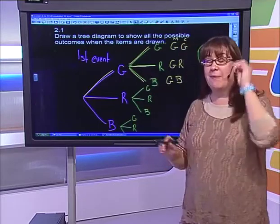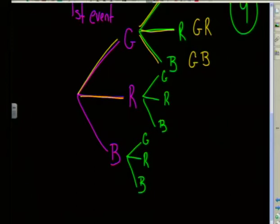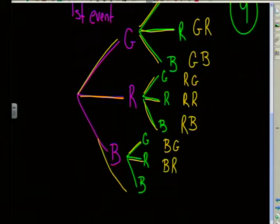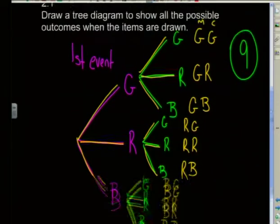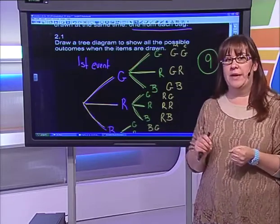I carry on doing this until every single one of my lines has been colored in. Going to red and green, red and red, then red and blue. Finally, blue and green, blue and red, and lastly blue and blue. Those are now all my possible outcomes. The question asked me to draw a tree diagram to show all the possible outcomes — there are nine of them and I've got every single combination.